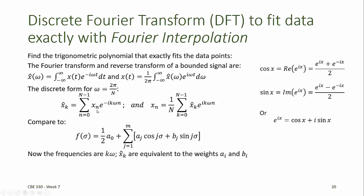Since we know all of the values of x sub n and we can choose values of omega, we can compute all of the x hat values from the sum. Once we know the x hat values, these are the a and b values, that is, our trigonometric coefficients in the trigonometric polynomial.